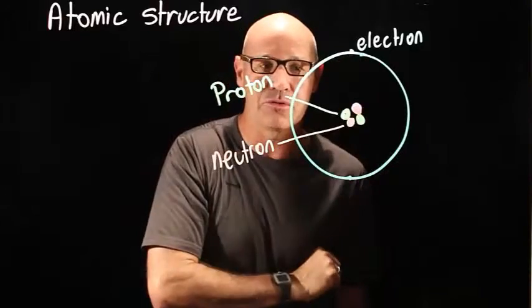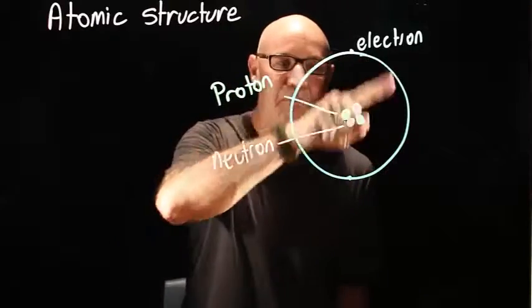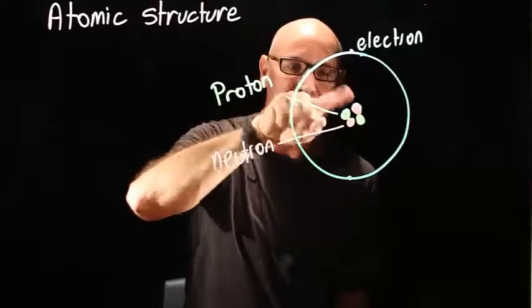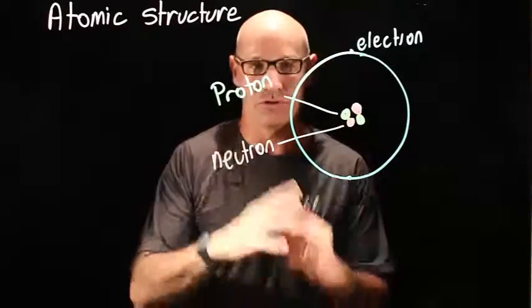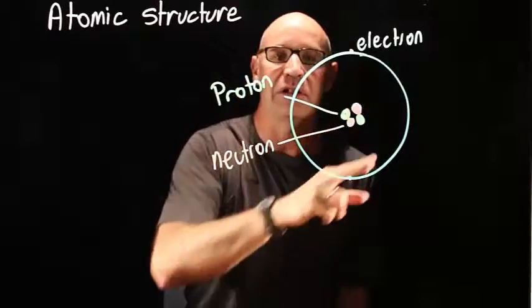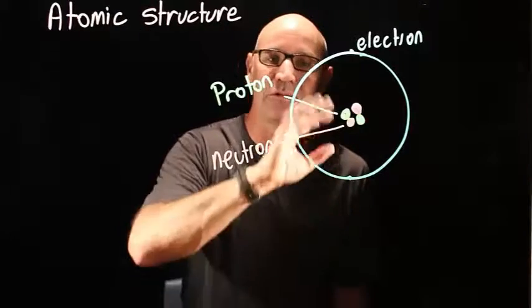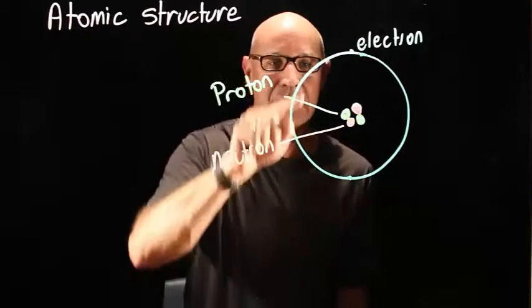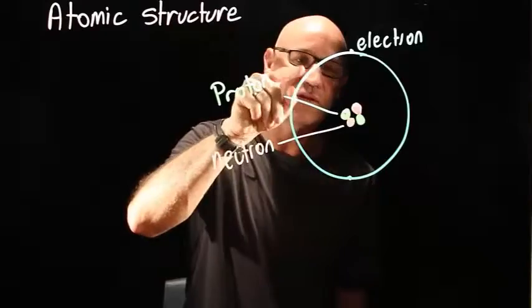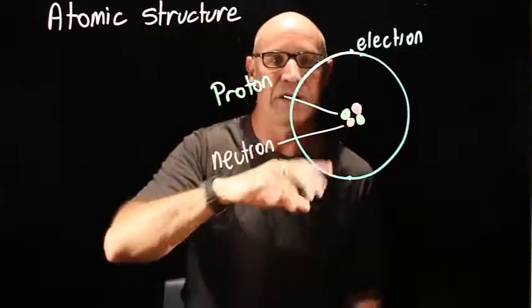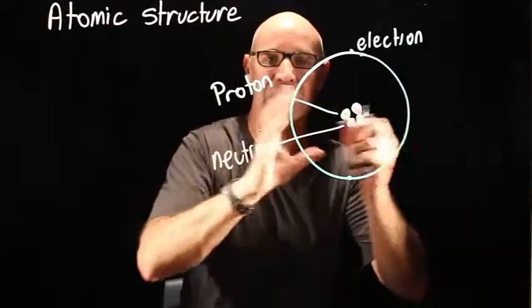Electrons are very, very small, and they buzz around the outside of the protons and neutrons, or the nucleus, in a cloud. Sometimes we call it a shell, but it's really a cloud. This is not solid, okay? This is just an orbit. But it's more of a zig-zaggy cloud.